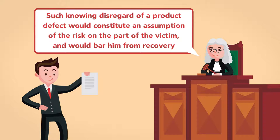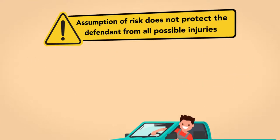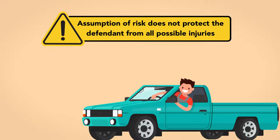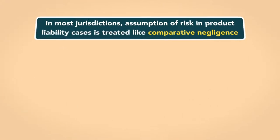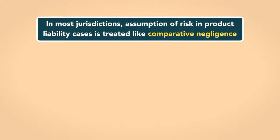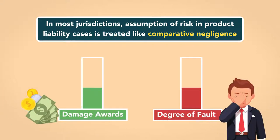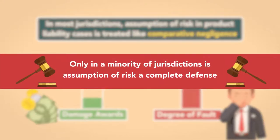Note, however, that assumption of risk does not protect the defendant from all possible injuries. If the plaintiff uses a product despite being aware of a dangerous defect but is injured by another, unknown defect, there is no bar on recovery for that other injury. Finally, in most jurisdictions, assumption of risk in product liability cases is treated like comparative negligence, in which damage awards are reduced in proportion to the degree of fault on the plaintiff. Only in a minority of jurisdictions is assumption of risk a complete defense.